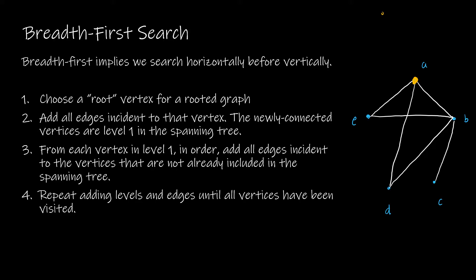instead, we are still going to add whatever our root node is going to be, but then we're going to add all edges incident to that vertex. So in this case, I would add AE and AB. I would add those edges. So I'm going to add B and E to